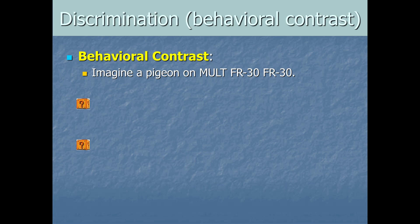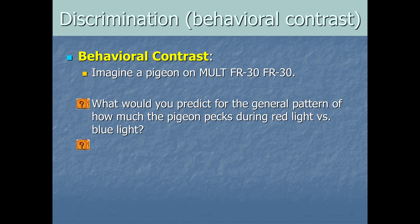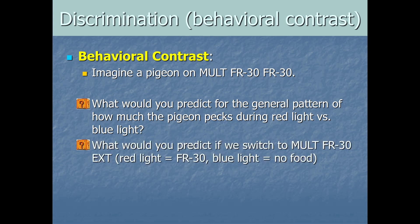Now, imagine a pigeon on a MULT FR-30 FR-30 setup. Okay. When the red light is on, it's 30 pecks per treat. When the blue light is on, it's 30 pecks per treat. What would you predict for the general pattern of how much the pigeon pecks during the red light versus the blue light? Well, likely we would see a similar rate of behavior in both cases, right? Since it's the same payoff on both of the schedules. Now, what would you predict if we switch to a MULT FR-30 EXT setup? Where the red light means we put them on an FR-30 schedule and the blue light means extinction, no reinforcing the behavior. After we do this for a while in this changed circumstance, what do you predict for their behavior in these two situations? Pause the video and come up with a specific prediction here.